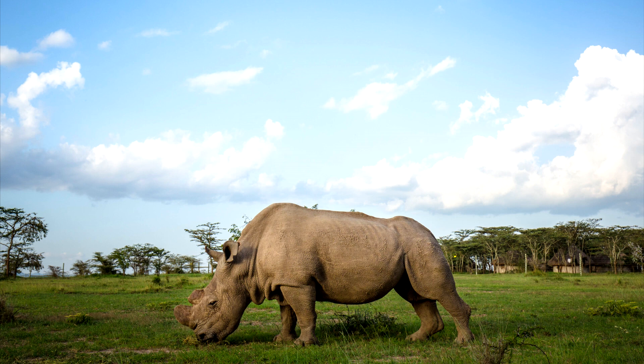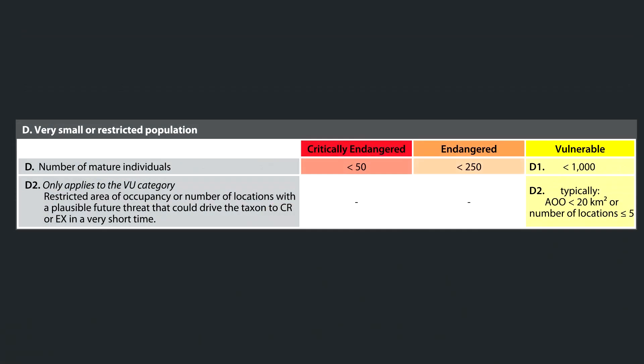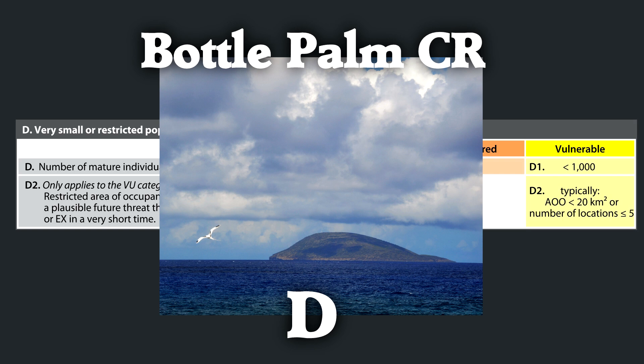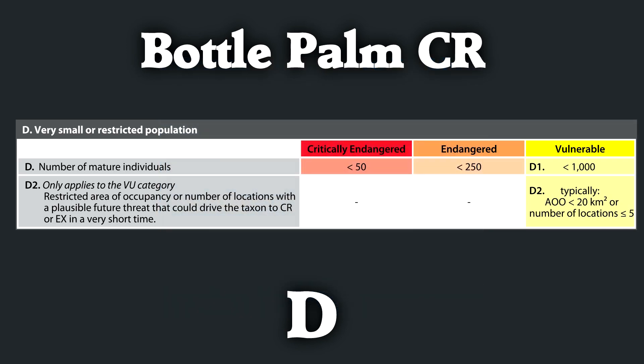Speaking of small populations, Criteria D is entirely about very small or restricted populations. The number of mature individuals for critically endangered is less than 50; for endangered, less than 250. One species categorized under Criteria D is the bottle palm — a beautiful palm tree common in horticulture. Its native range is one tiny island of just 0.65 square miles, and it was listed under Criteria D because there are less than 10 individuals left in their native range.